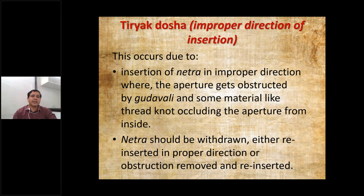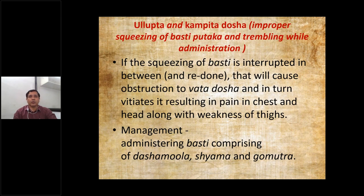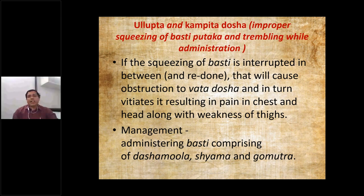Tiryaka occurs due to insertion of Netra in an improper direction where the aperture gets obstructed by Gudavali, and some material like a thread knot may occlude the inner hole. The Netra should be withdrawn and reinserted in the proper direction, or the obstruction must be removed. Next, Ullupta and Kampita — improper squeezing of Bastiputak and trembling while administration — are discussed together. If the skill is not there, or negligence is the cause, if the squeezing of Bastiputak is interrupted in between, that will cause obstruction to Vata dosha, resulting in pain in the chest and head along with weakness of eyes.